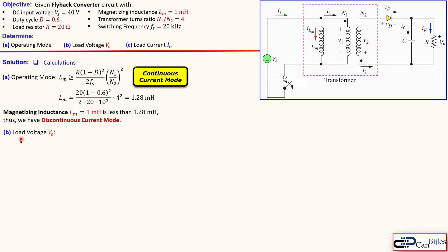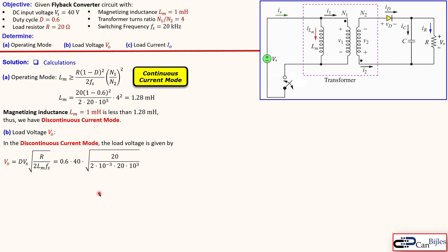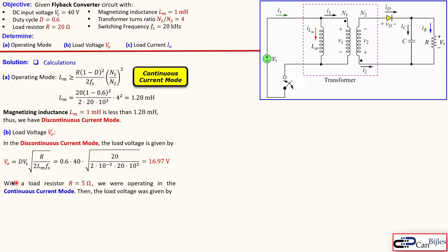For question (b), the load voltage in DCM uses the expression we derived. Substituting all values — D = 0.6, Vs = 40 V, R = 20 Ω, Lm = 1 mH, Fs = 20 kHz — we get Vo ≈ 16.97 V, approximately 17 V. This is larger than the result for the continuous current mode case, because in the previous example the resistor was 5 Ω and we were in CCM with a different output voltage formula.